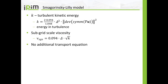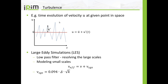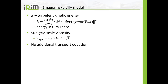In the Smagorinsky-Lily model, our first LES model, we calculate the turbulent kinetic energy K out of the velocity field. You create the grad-U tensor, take the symmetric part and the deviatoric part, calculate the magnitude and square it, then multiply by delta-squared and a couple of constants. This is how you calculate K in this model - it is a very simple model. Then you take this K value and from it calculate your subgrid scale viscosity. Importantly, there is no additional transport equation; you do not transport K but rather calculate it from your velocity field.